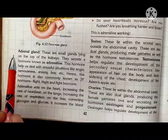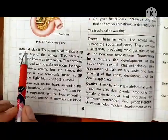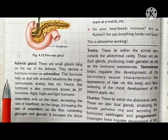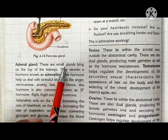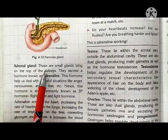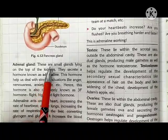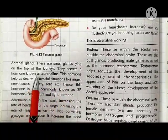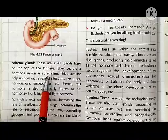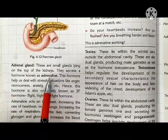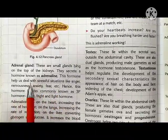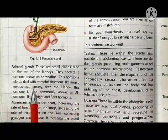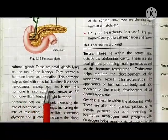After that we will study the adrenal gland. The adrenal glands are small glands lying on top of the kidney. They secrete a hormone known as adrenaline. This hormone helps us deal with stressful situations like anger, nervousness, anxiety, and fever.